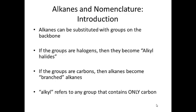When we think about nomenclature of alkanes, we can substitute alkanes with groups on the backbone. If the groups are halogens, it's an alkyl halide. If the groups are carbons, then the alkane becomes a branched alkane with those carbon alkyl groups being substituents.